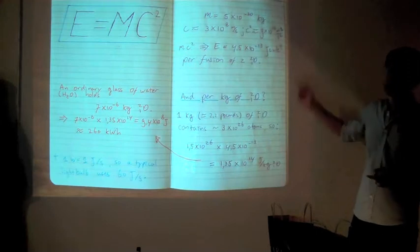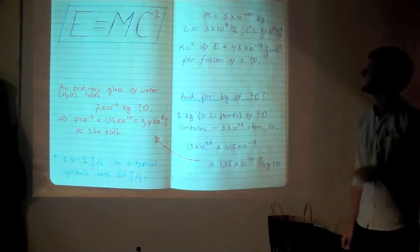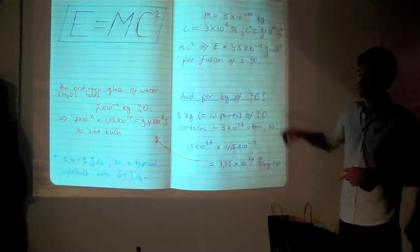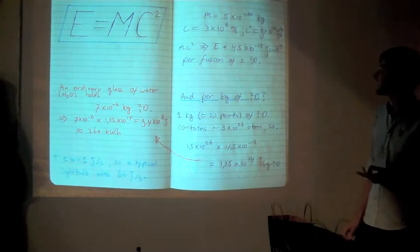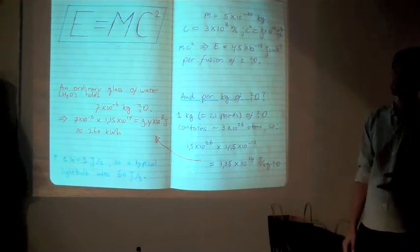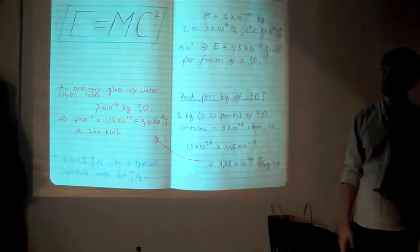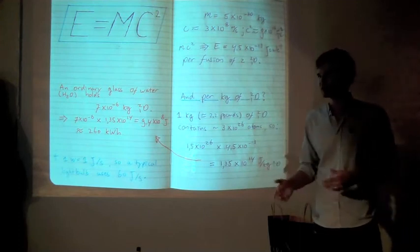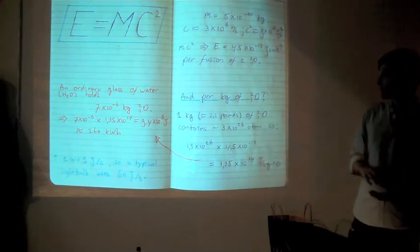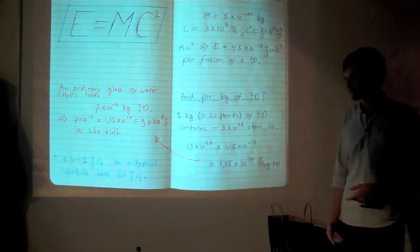So the mass, we just found out, is 5 times 10 to the minus 30 kilograms. C, the speed of light squared, is 9 times 10 to the 16 meters squared per second squared. So if you take the product, you get 4.5 times 10 to the minus 13 joules. The joules being a unit of energy. Those light bulbs use about 60 joules per second. So that will give you an idea of how much joules is, and also how little this is. But if you convert it to how much per kilogram of deuterium it would produce, you get 1.35 times 10 to the power of 14, which is an immense amount of energy.